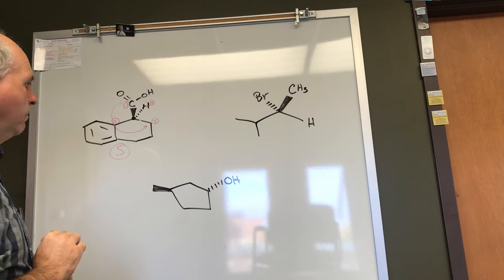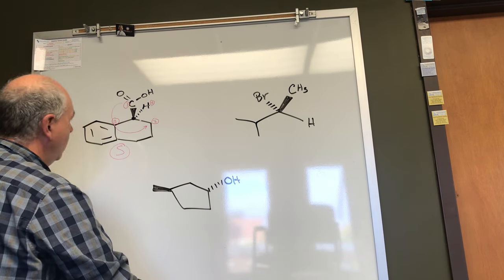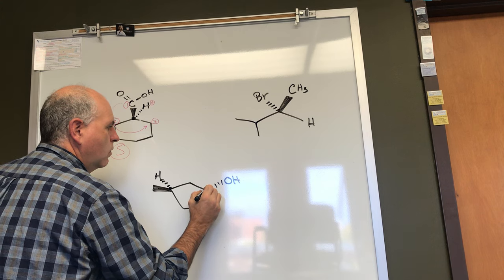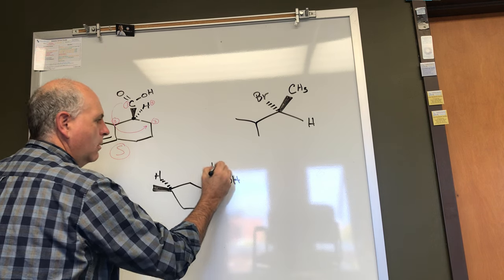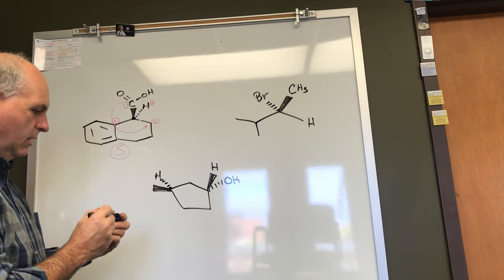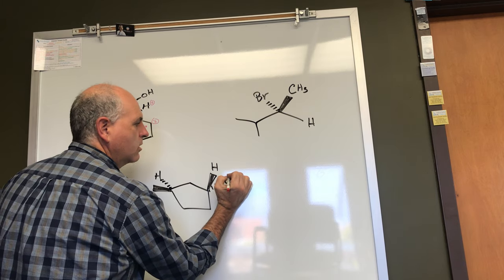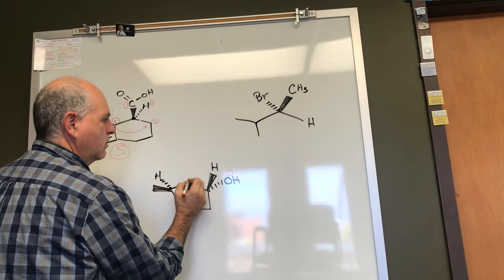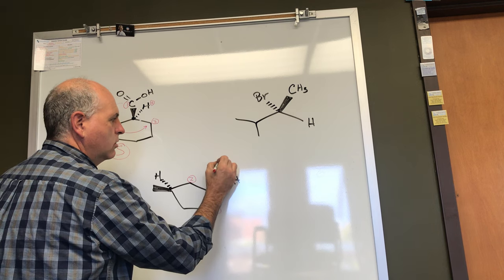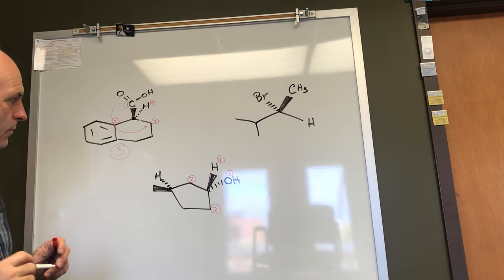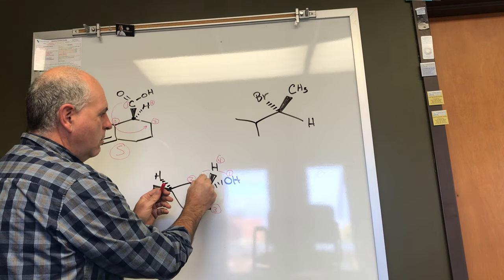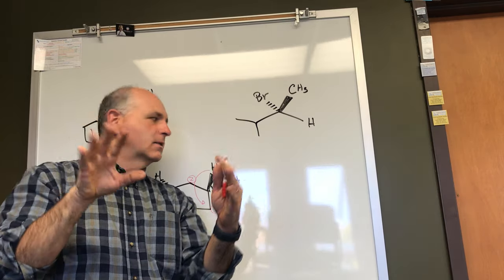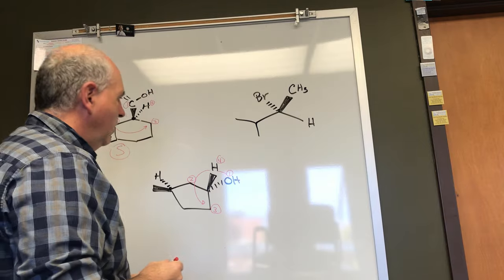Now let's look at the next example. I'll draw in the hydrogens — there's a hydrogen going back from one carbon and a hydrogen coming towards us from another carbon. Let's assign priorities: the oxygen has highest priority; going this way around the ring gets to a branch sooner, so that's second priority; this is third priority; and hydrogen is fourth. Going from one to two to three is counterclockwise, but the hydrogen is coming towards us. Looking at it from the backside, that rotation goes to the right, giving R configuration.